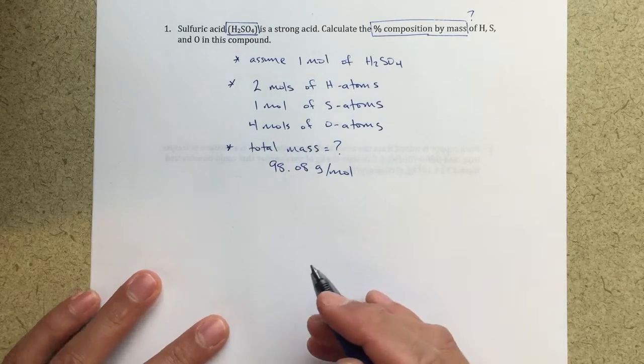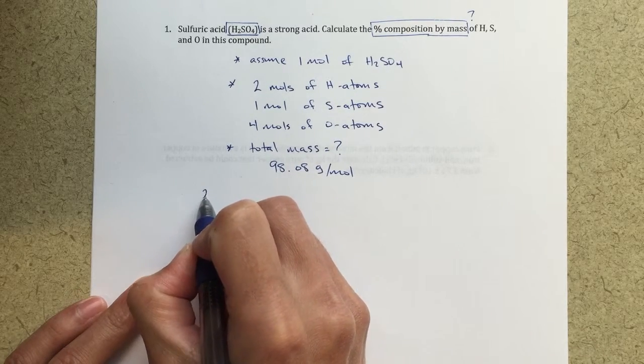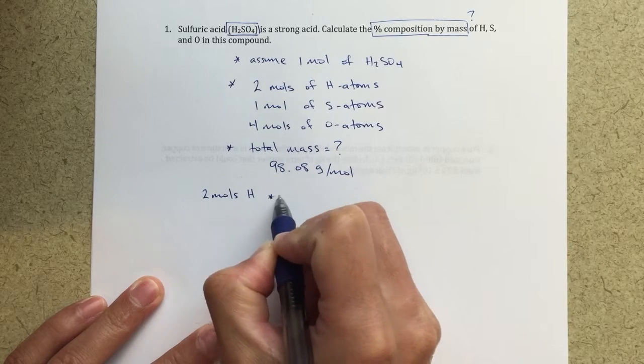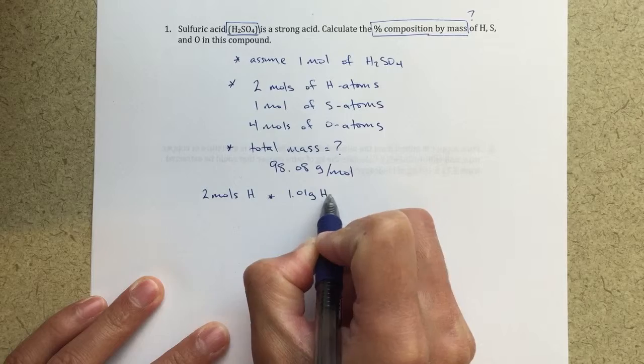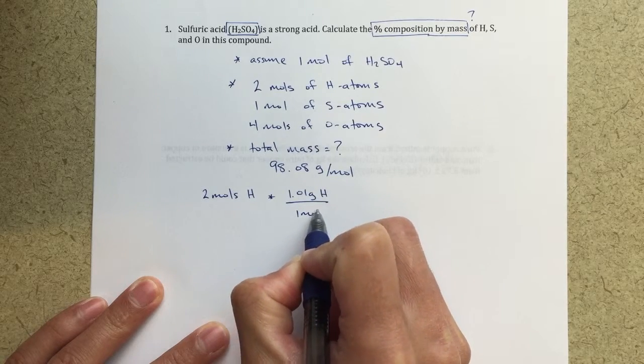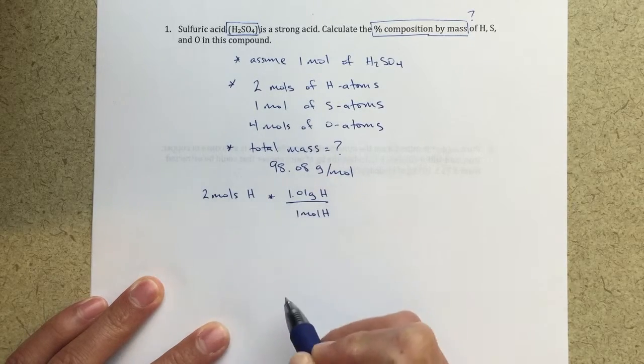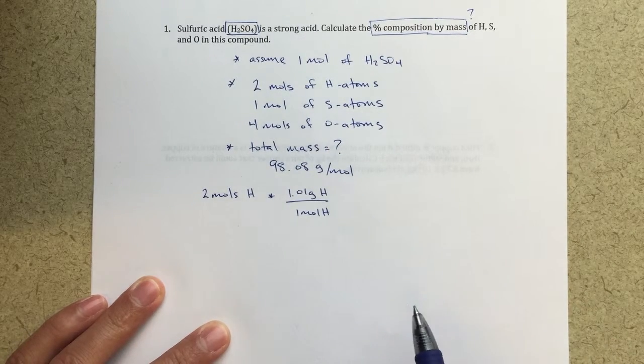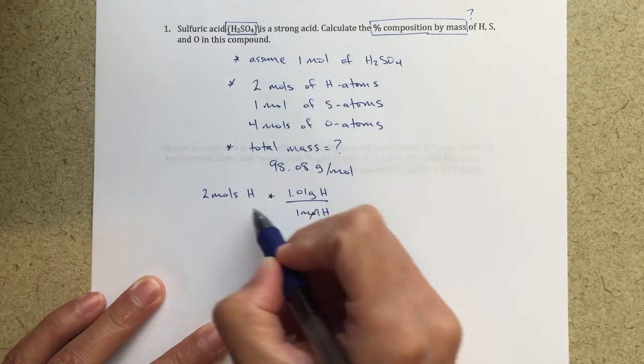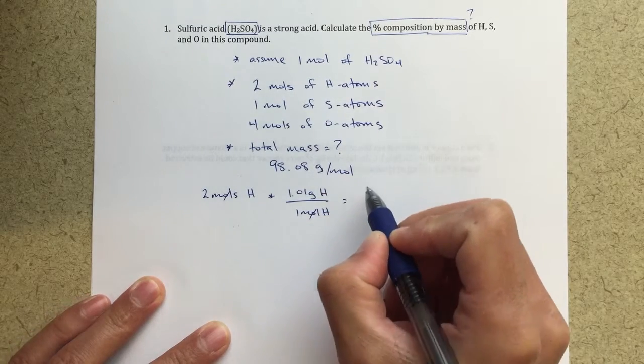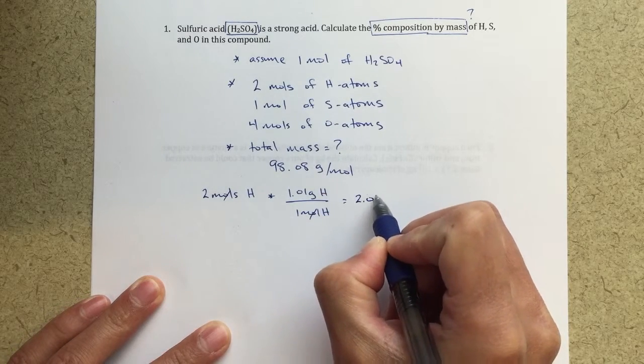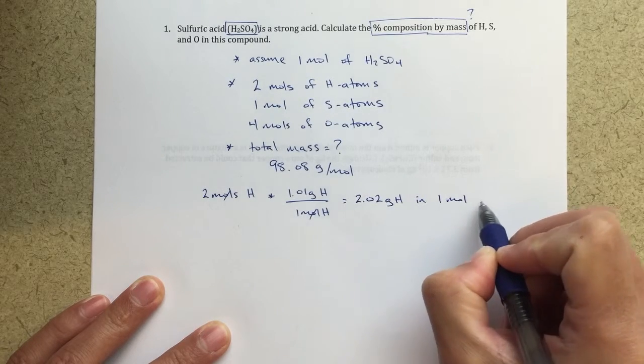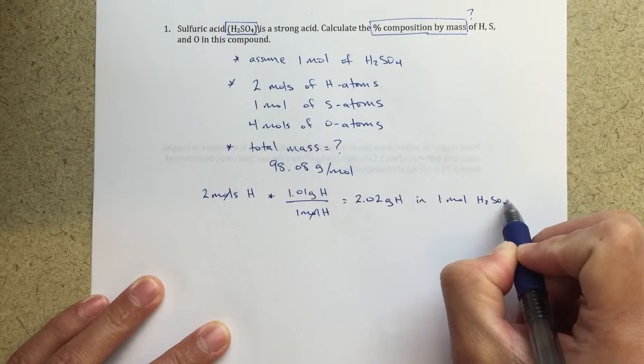So now we can really start doing the calculations. So, if I take my two moles of hydrogen, and I multiply that by 1.01 grams of hydrogen for every one mole of hydrogen, this 1.01 grams, that's from the periodic table, so that's what's right underneath hydrogen, it says 1.01 grams. So, what this is going to tell me, if I do this calculation, it's going to tell me that I will have 2.02 grams of hydrogen in my one mole H2SO4 sample.